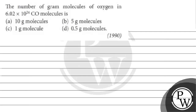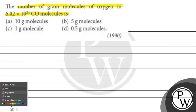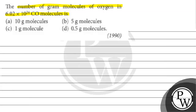Let's read this question. The question says: number of gram molecules of oxygen in 6.02 × 10²¹ carbon monoxide molecules. Option A: 10 gram molecules. Option B: 5 gram molecules. Option C: 1 gram molecule. Option D: 0.5 gram molecules.